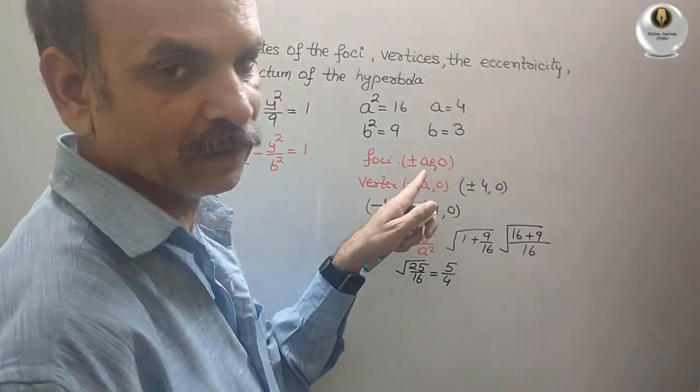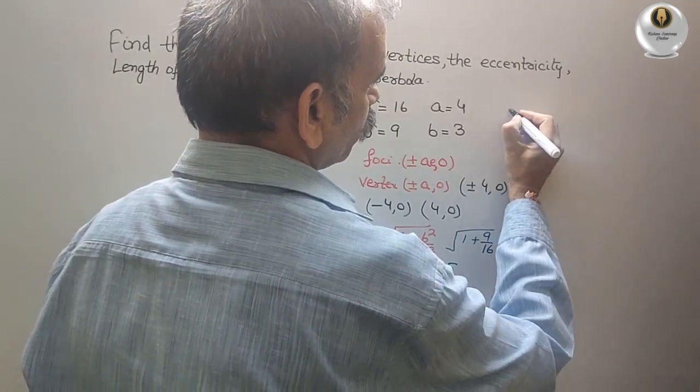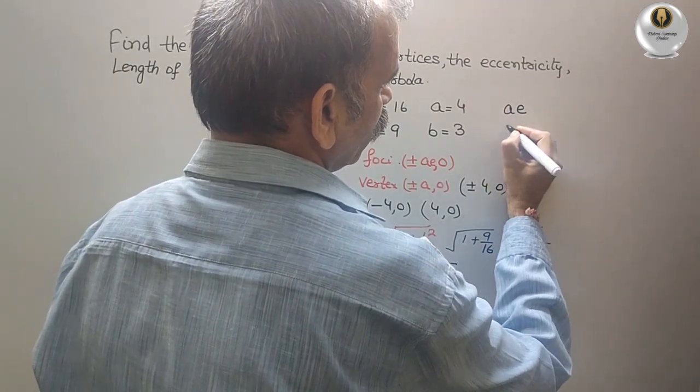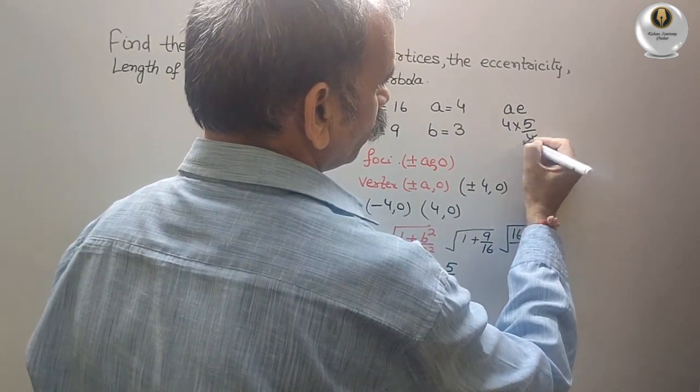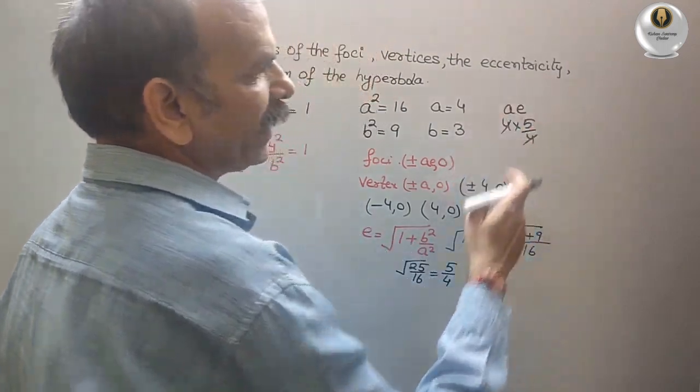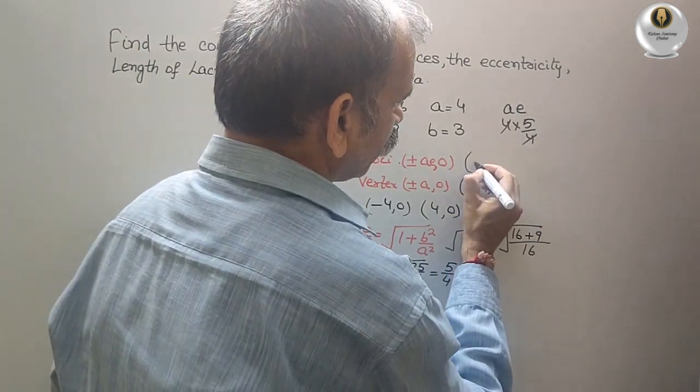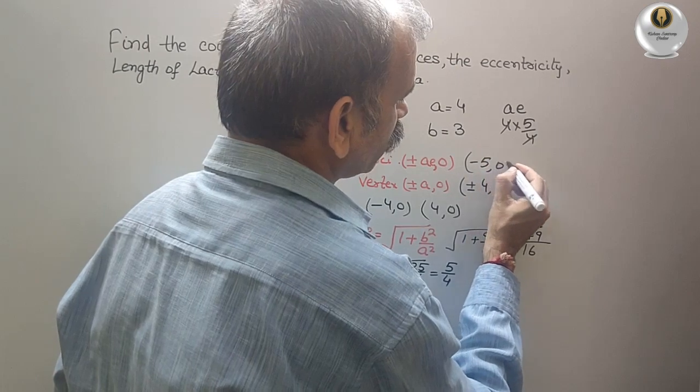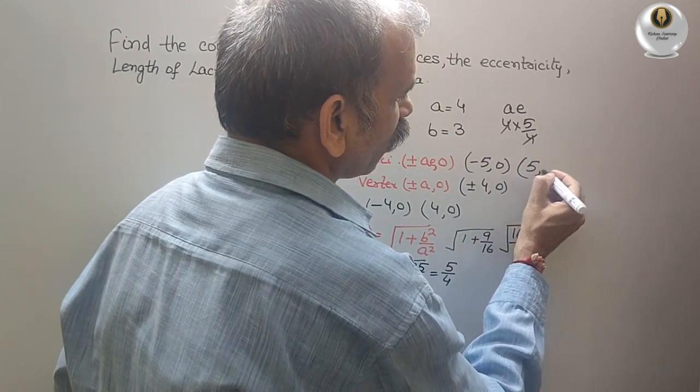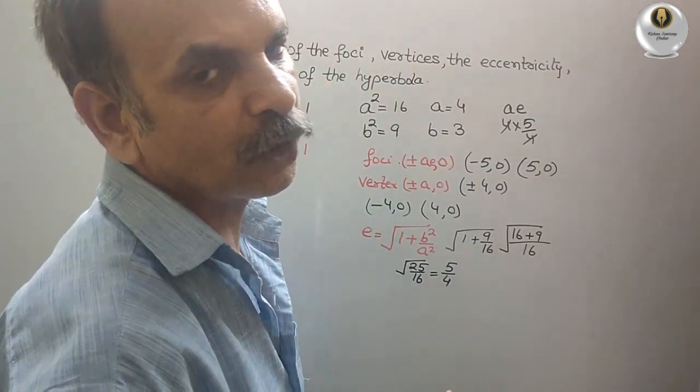Now we can get A E. A is 4. A E. So 4 into 5 by 4. 4, 4. That means A E is 5. So here we will get, first coordinate is minus 5 comma 0 and second coordinate is 5 comma 0. So this is your focus.